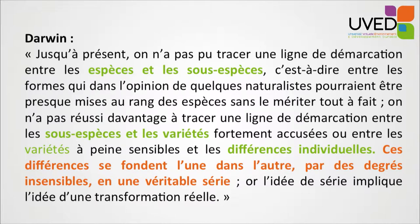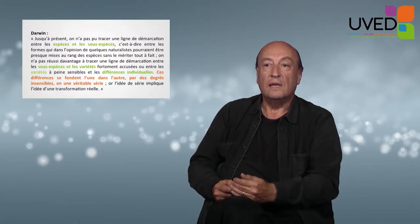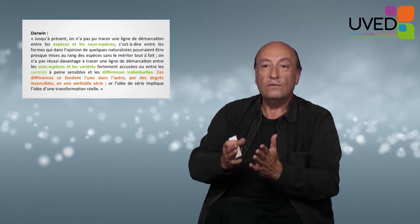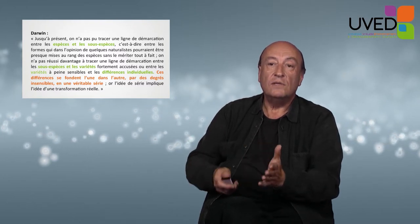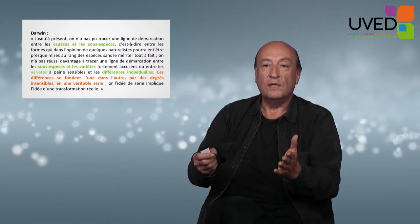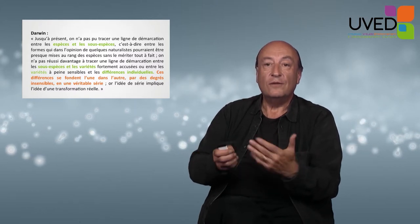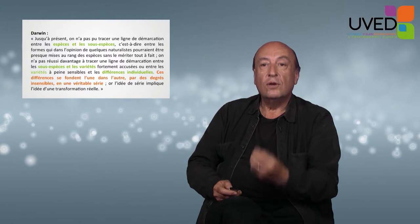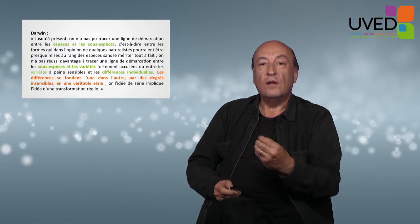So the difference between species, subspecies, varieties, and individuals forms a continuum, and the differences emerge with insensible degrees to become a real series. Darwin lays emphasis on the fact that we've never been able to provide a clear definition of when two lineages become a species — because it's a progressive process.